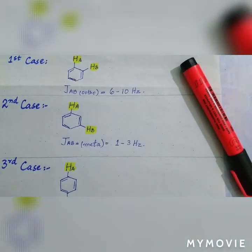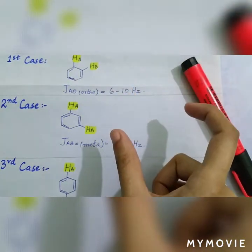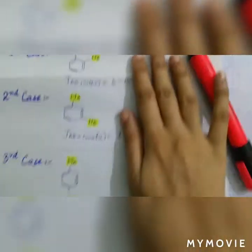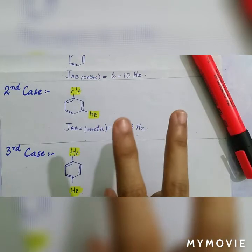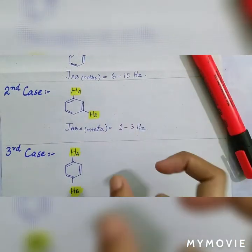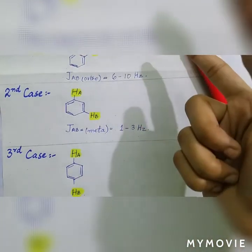Keep in mind, when protons are at ortho positions, they will split each other with a wider distance. And when the protons are at meta positions, they will split each other with a lesser distance as compared to ortho. They will be less wide as compared to the ortho signal.